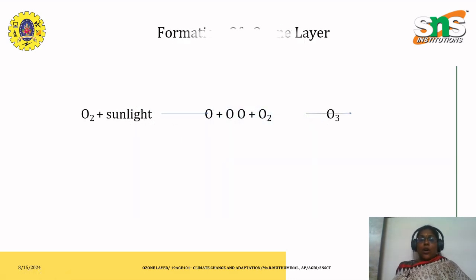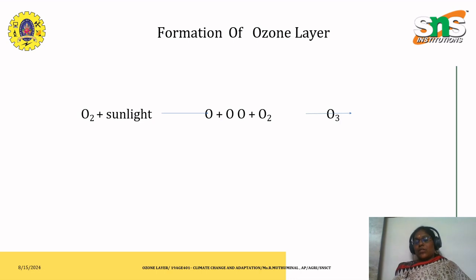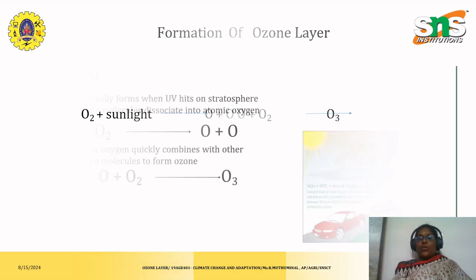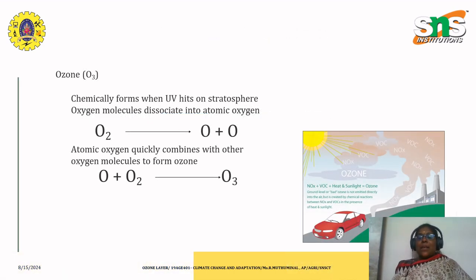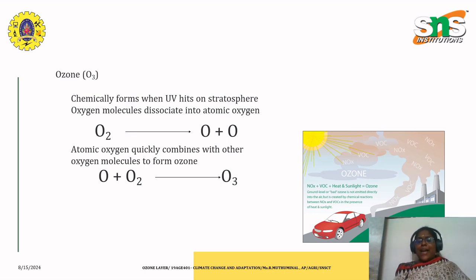This is how the ozone layer is formed: oxygen plus sunlight react together, and after the reaction, three oxygen atoms form ozone. Chemically, oxygen molecules react with UV radiation and get dissociated into two atomic oxygen atoms. These atomic oxygen atoms quickly combine with other oxygen molecules to form ozone.